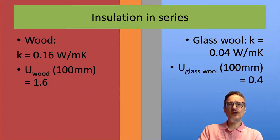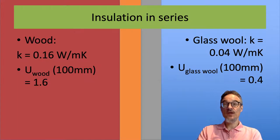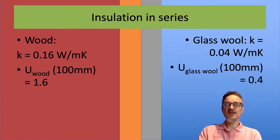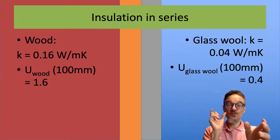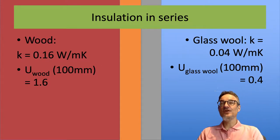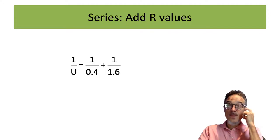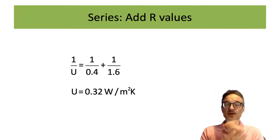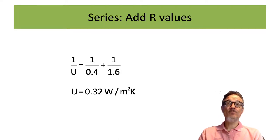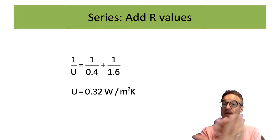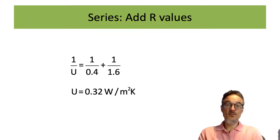Let's look at an actual calculation. Say this is wood on the left and glass wool on the right — 100 millimetres each, giving a 200 millimetre thick wall. The U-value of the wood is 1.6, and the U-value of the glass wool is 0.4. Working out the combined U-value in series: 1/U = 1/0.4 + 1/1.6, which gives U approximately 0.32 watts per metre squared Kelvin. So that's for calculating in series — remember that number.